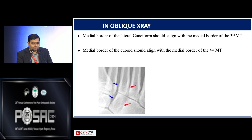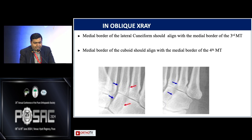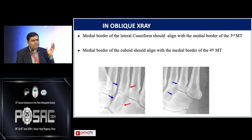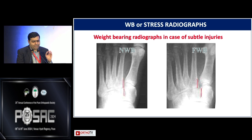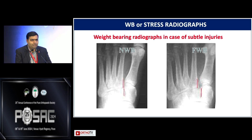On oblique X-rays, draw lines from the lateral cuneiform medial border to the medial border of the third metatarsal, and the medial border of the cuboid with the medial border of the fourth metatarsal. This gives you an idea of whether the Lisfranc joint complex is stable or not. It's very important to get stress and weight-bearing X-rays, as Lisfranc strains are very commonly missed in practice.